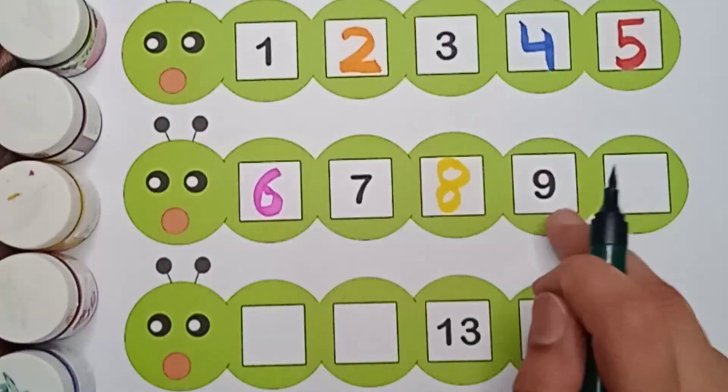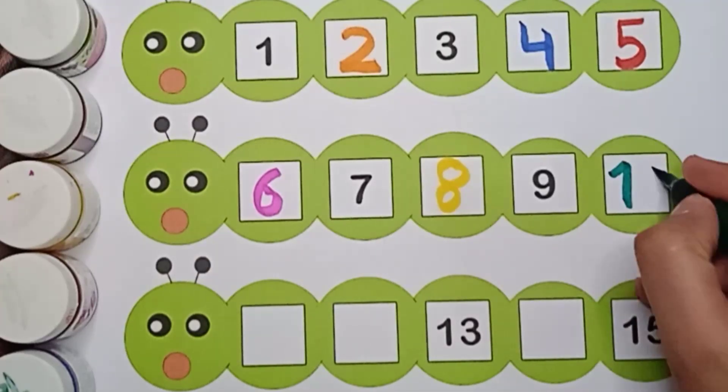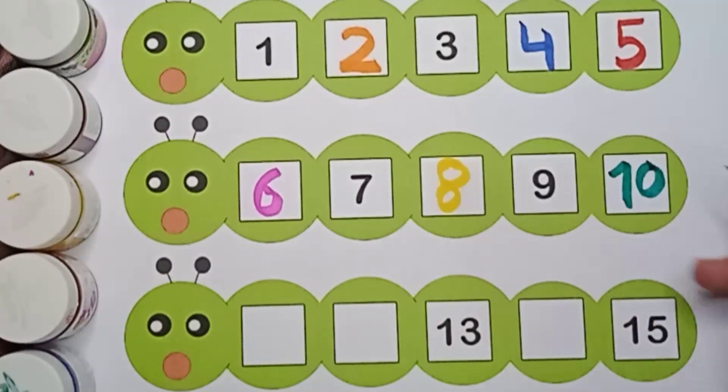Green color. This one is 9. And what comes after 9? 1, 0. 10. Green color. 10.